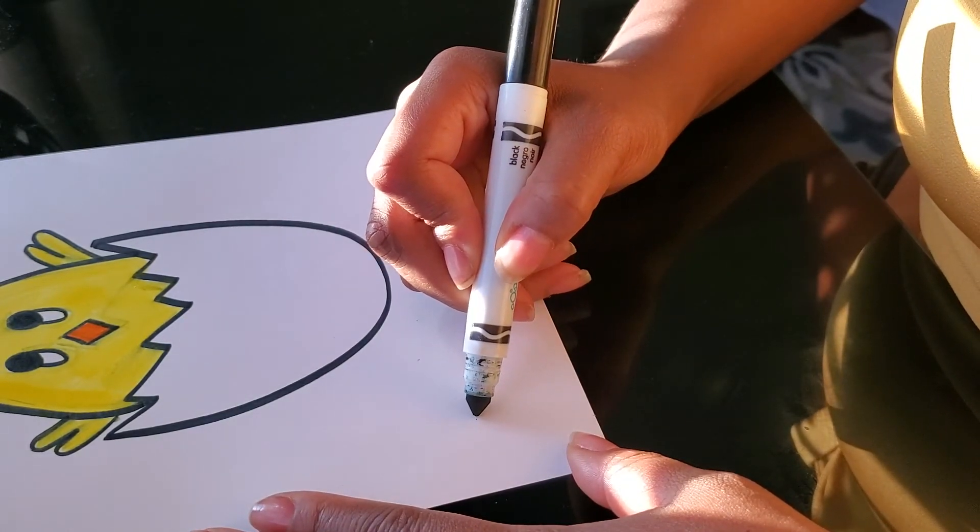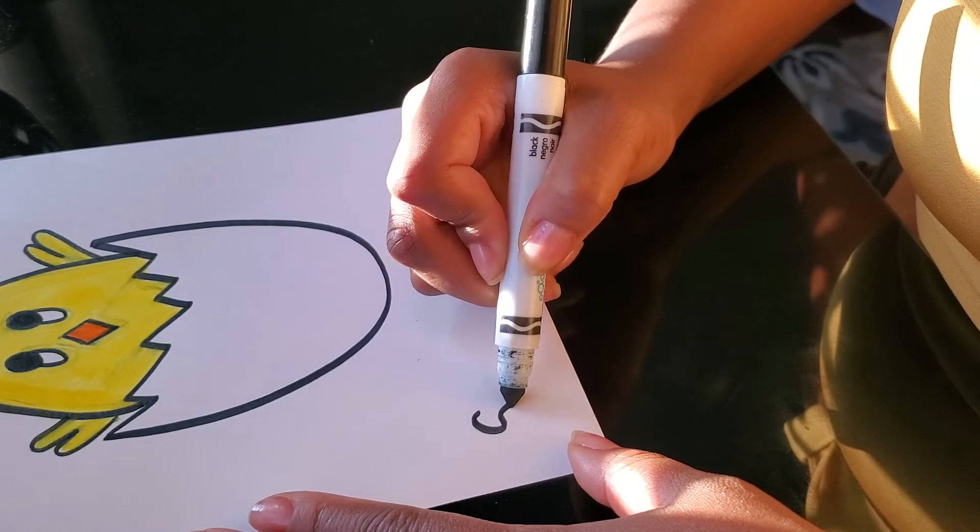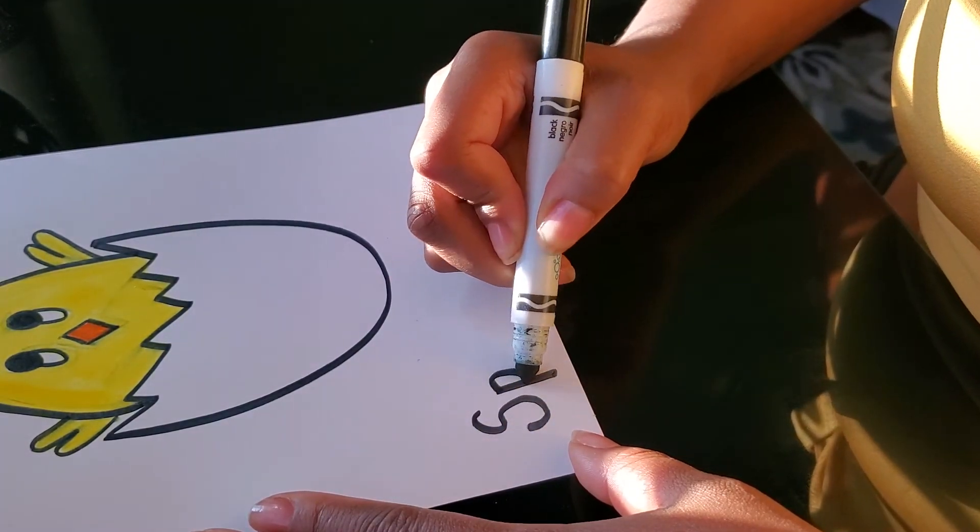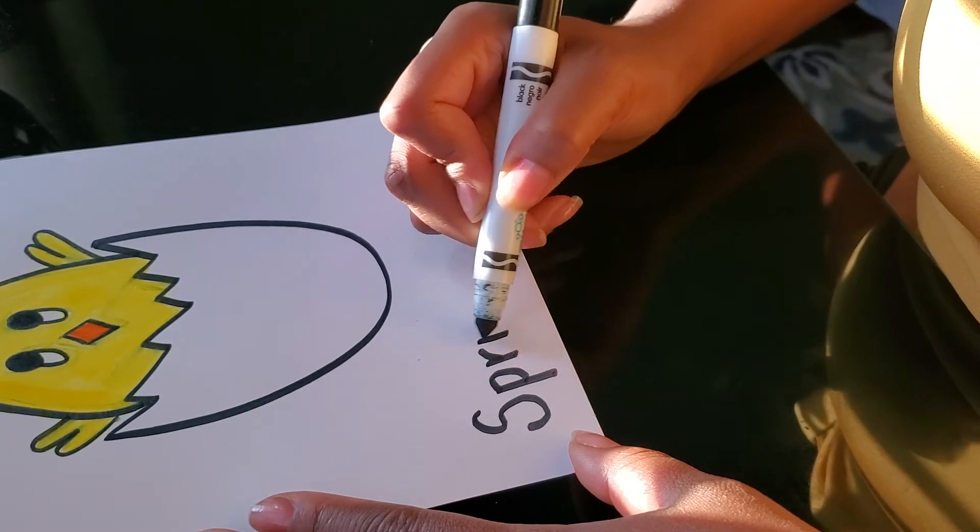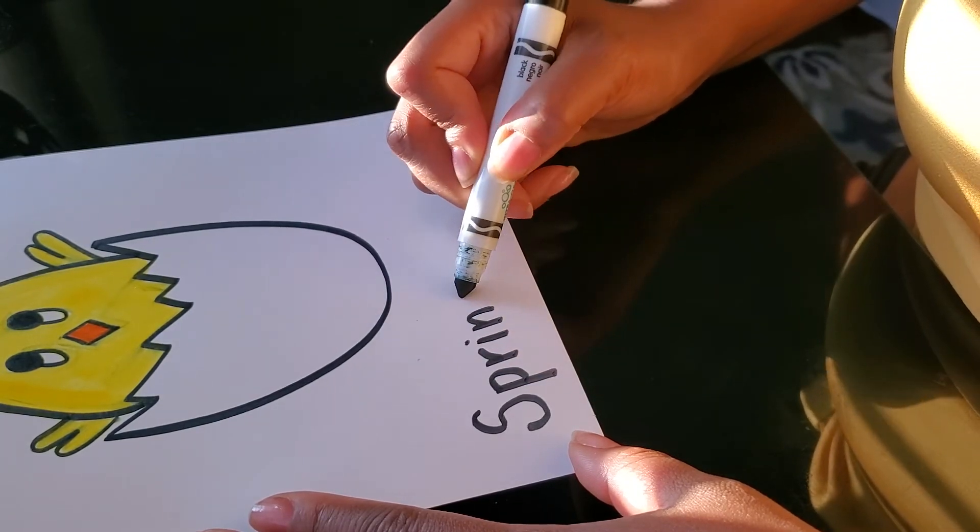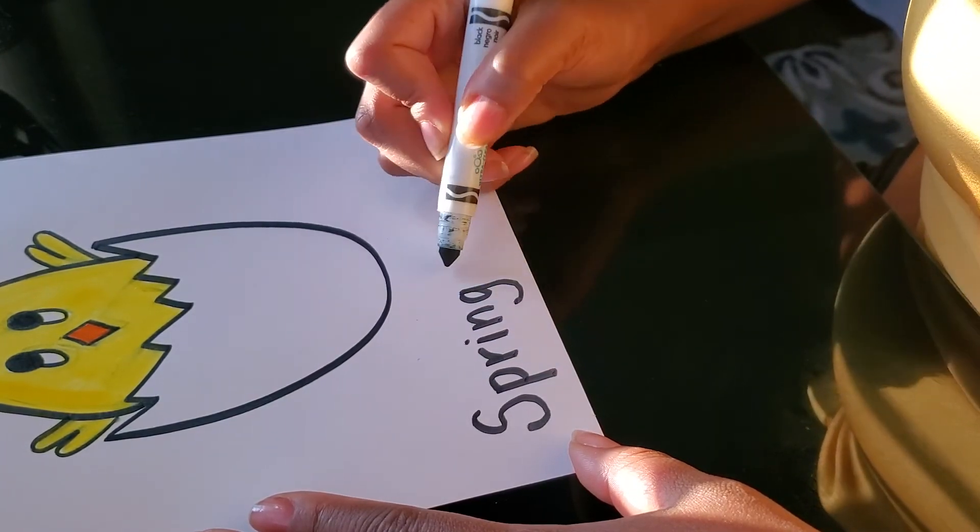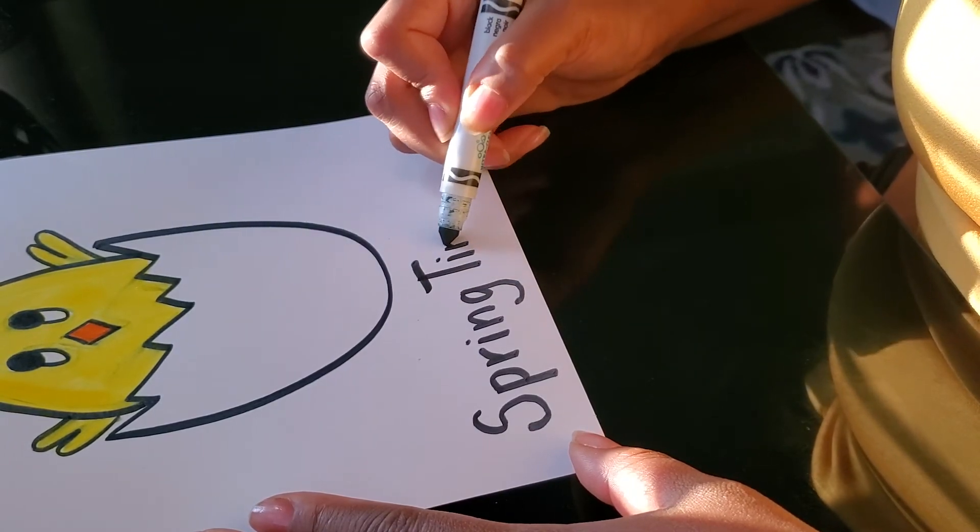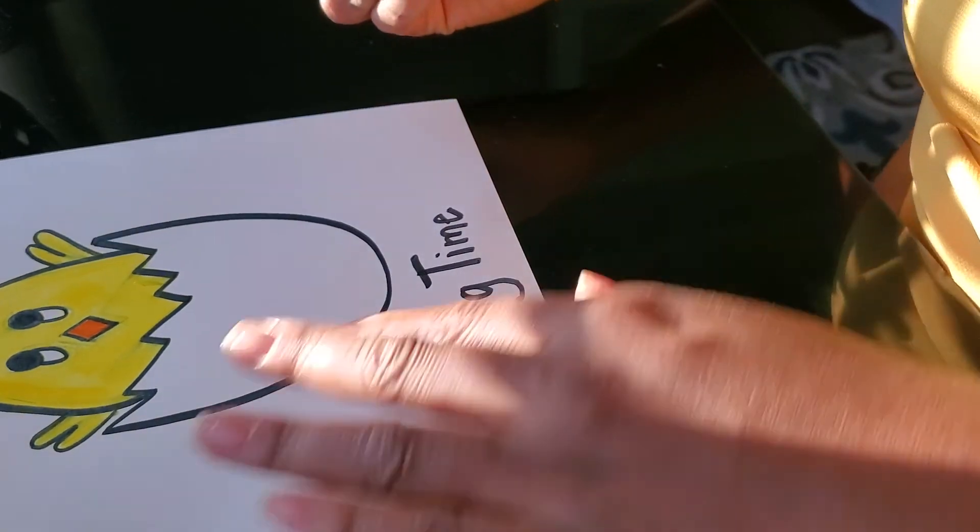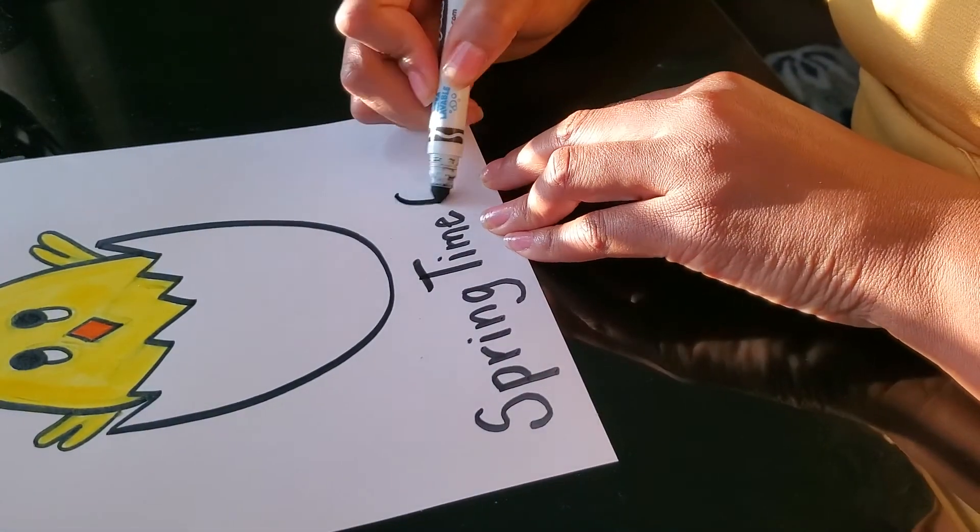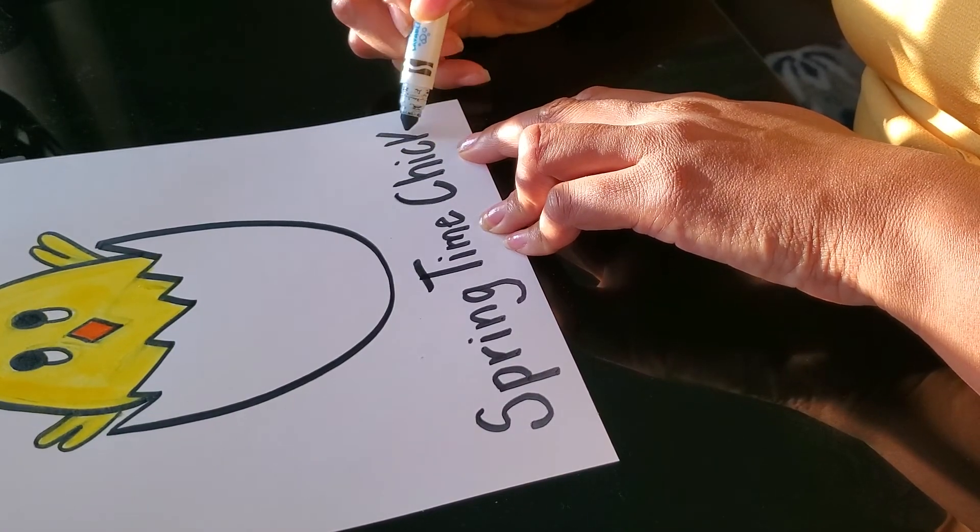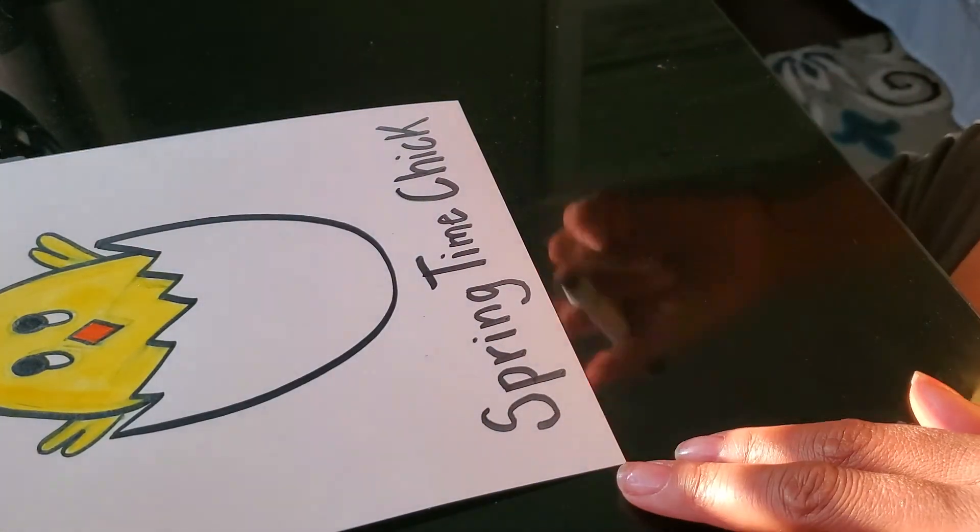They call them spring chicken, so let's spell springtime chick. S-P-R-I-N-G, time, T-I-M-E, chick, C-H-I-C-K, springtime chick.